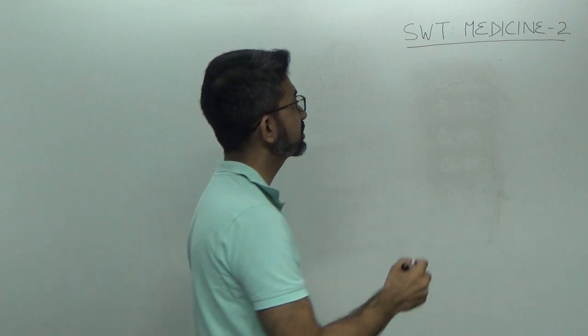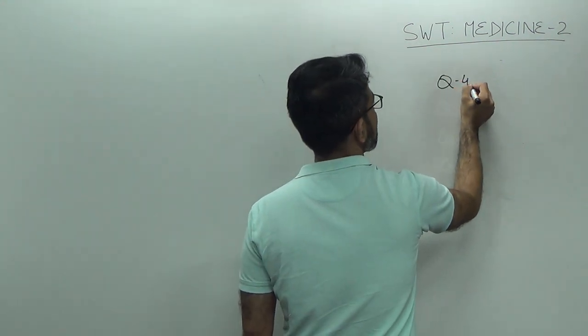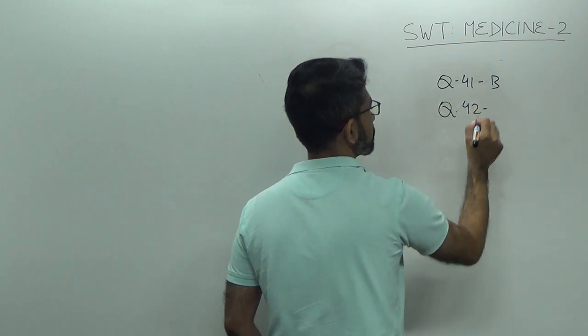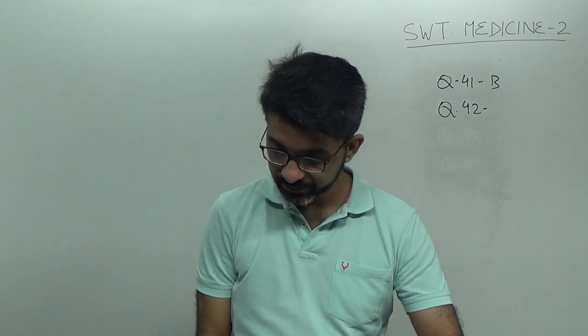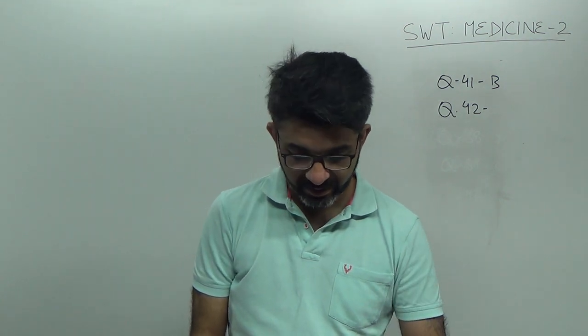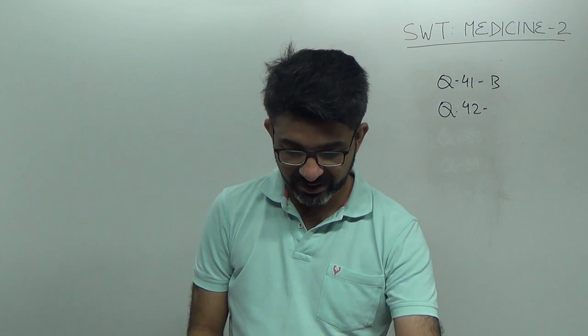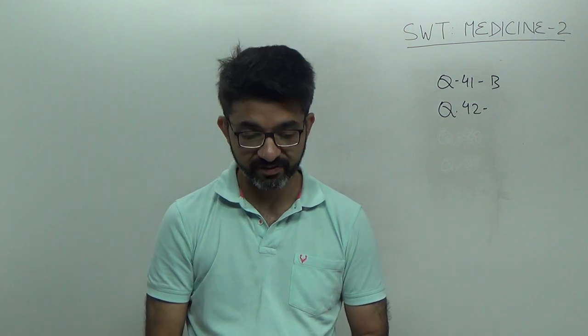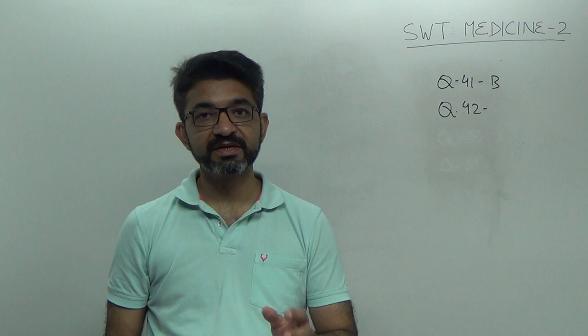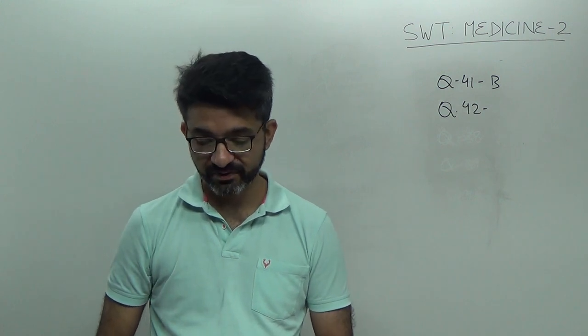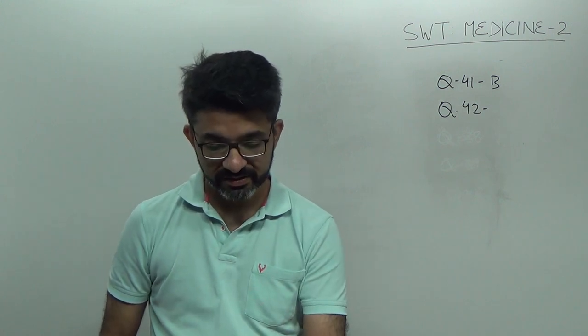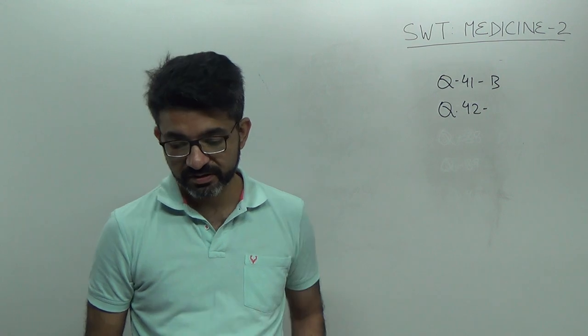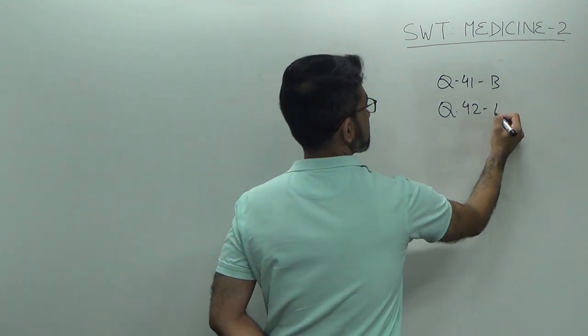So, question number 41. Answer is B. Question number 42. HIDA scan. HIDA scan is used to diagnose acute cholecystitis. It's a technetium 99 based scan, right? So, gallbladder and biliary tree is visualized by this scan. In cases of acute cholecystitis and biliary atresia, you know, HIDA scan is the scan of choice. So, acute cholecystitis. Answer is A.